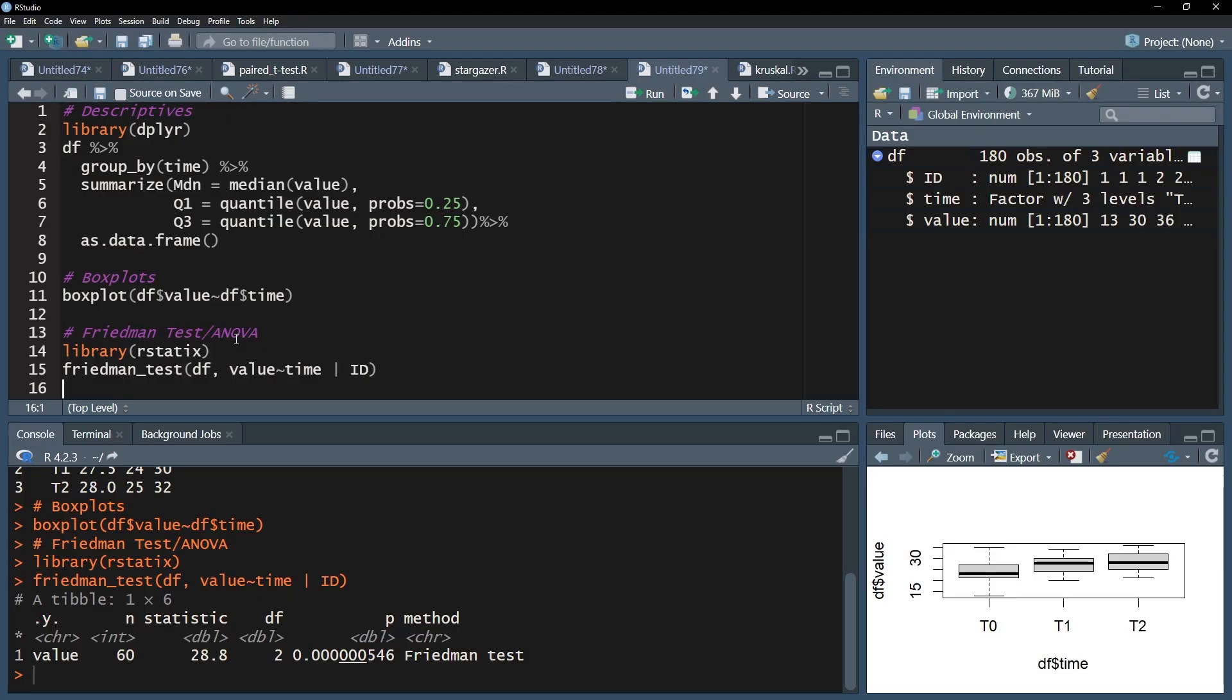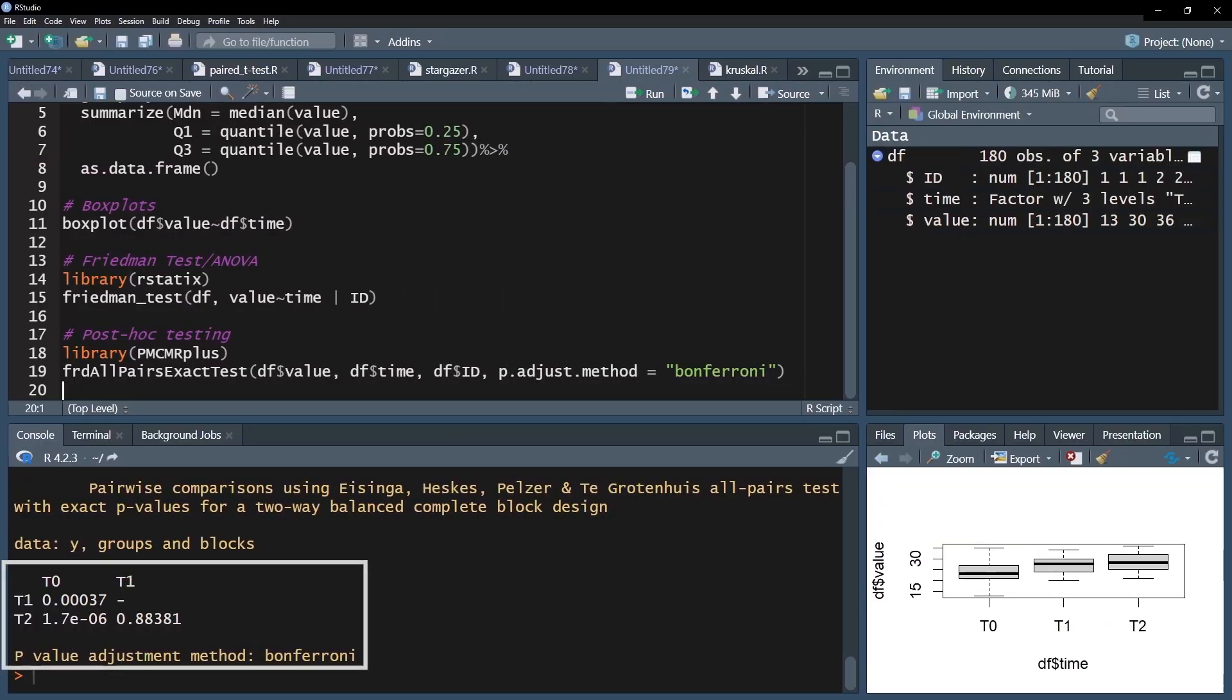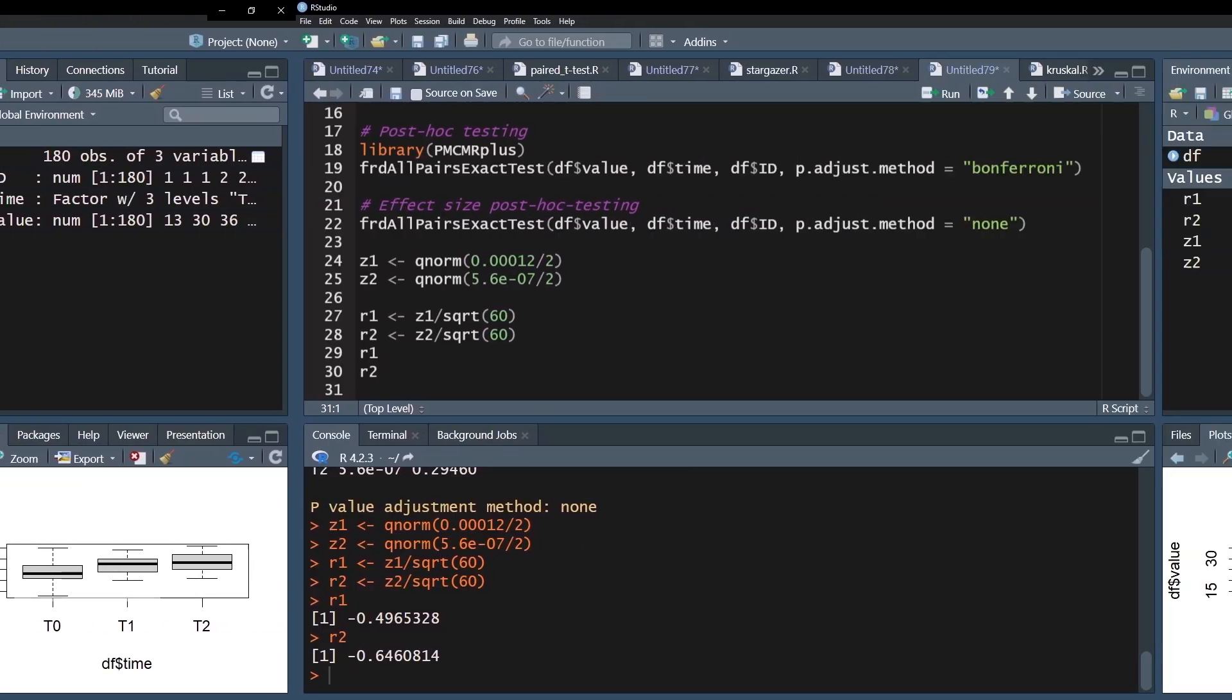When you're done, you have to write up the results. The output of the Friedman test in R usually consists of the test itself, follow-up post-hoc tests and, in the case of observed differences, the effect size r.